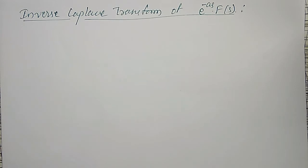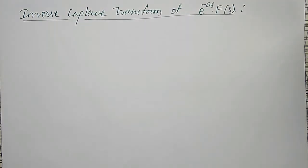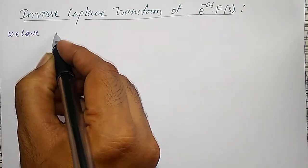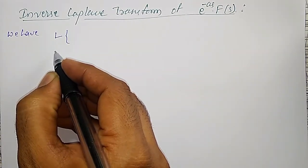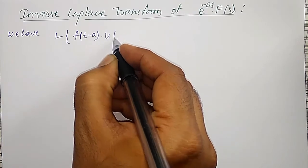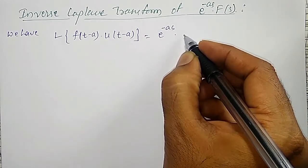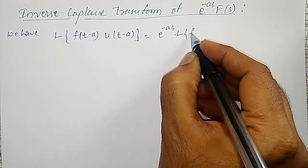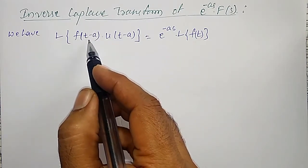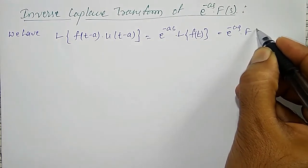I am going to explain how to find the inverse Laplace Transform of e to the power minus as into F of s, and a few examples I am going to do here. We have the Laplace Transform of the unit step function: the Laplace Transform of f(t minus a) into u(t minus a) is equal to e to the power minus as into the Laplace Transform of f(t). This means f(t minus a) is shifted from f(t). Or, I can write this as e to the power minus as into capital F of s.